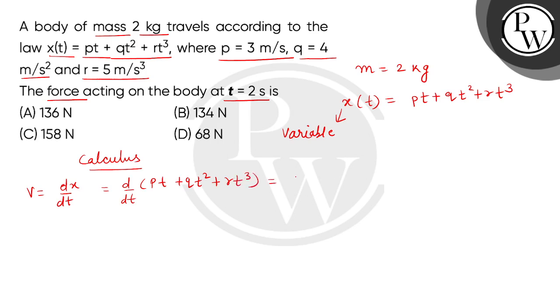So here we have p(d/dt of t) + q(d/dt of t²) + r(d/dt of t³). Now, let's put values.